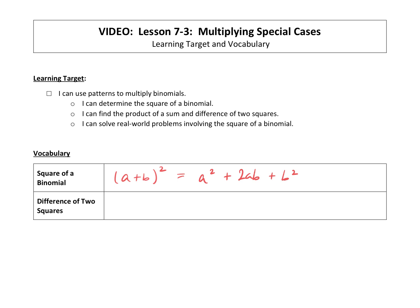The difference of two squares: if you are multiplying an a minus b times an a plus b, that's going to equal a squared minus b squared. Again, these will be explained in your upcoming examples, but now you've got them in one nice spot to reference back to.